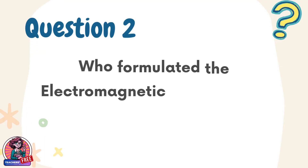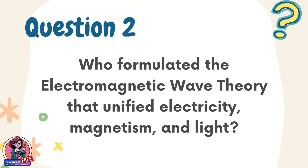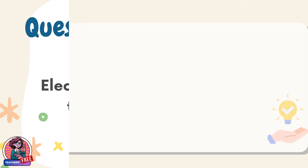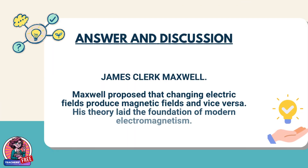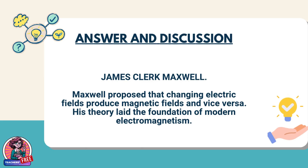Question 2. Who formulated the electromagnetic wave theory that unified electricity, magnetism, and light? Answer: James Clerk Maxwell. Maxwell proposed that changing electric fields produce magnetic fields and vice versa. His theory laid the foundation of modern electromagnetism.